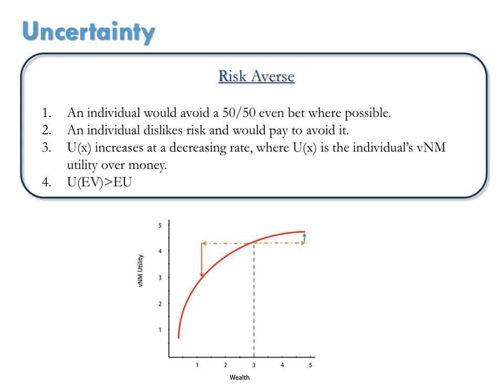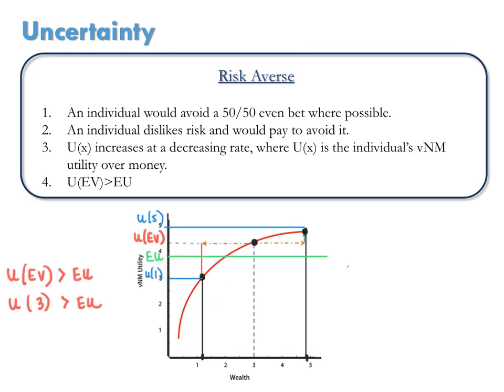Why does picking option 1 mean you're risk-averse? Well, remember that option 1 gave you $3 with certainty. With option 2, there was a 50% chance of winning $1, and a 50% chance of winning $5. So, the expected value of option 2 was $3.